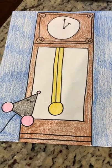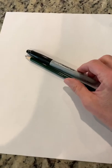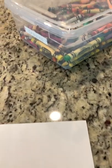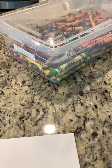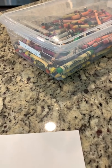You're gonna need a white sheet of paper, a pencil, and a sharpie. I used my crayons to color my clock and mouse, and we'll talk about that in a little bit. Let's get started with our drawing.